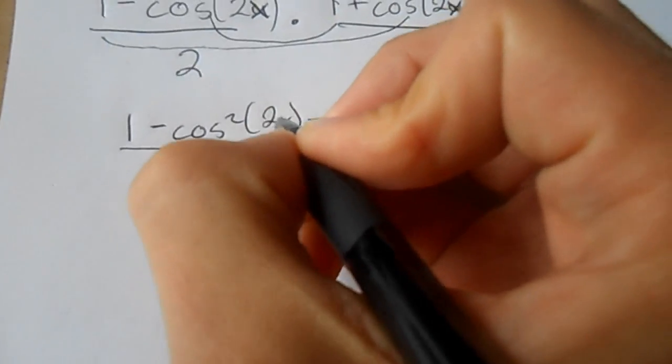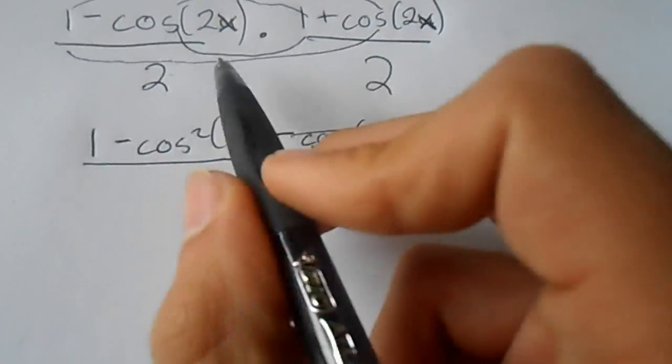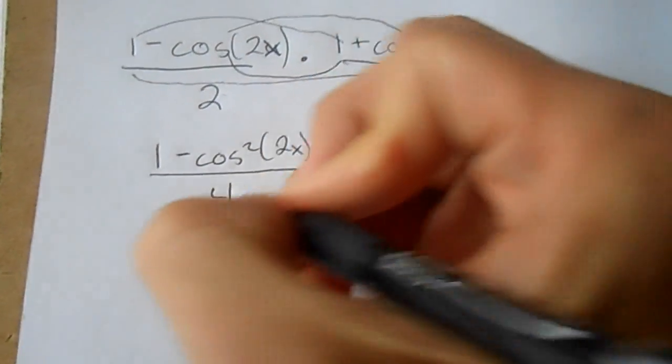So it would be (1 - cos²(2x)), and you have to remember to multiply the denominator, we get over four.